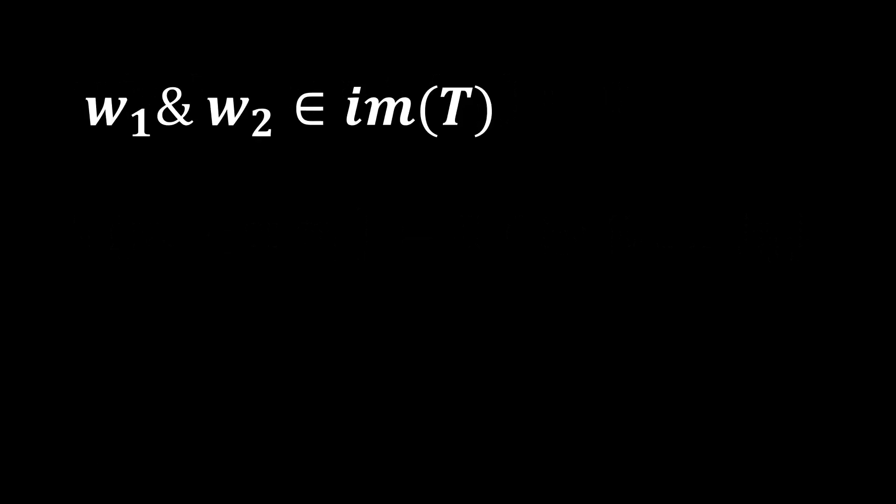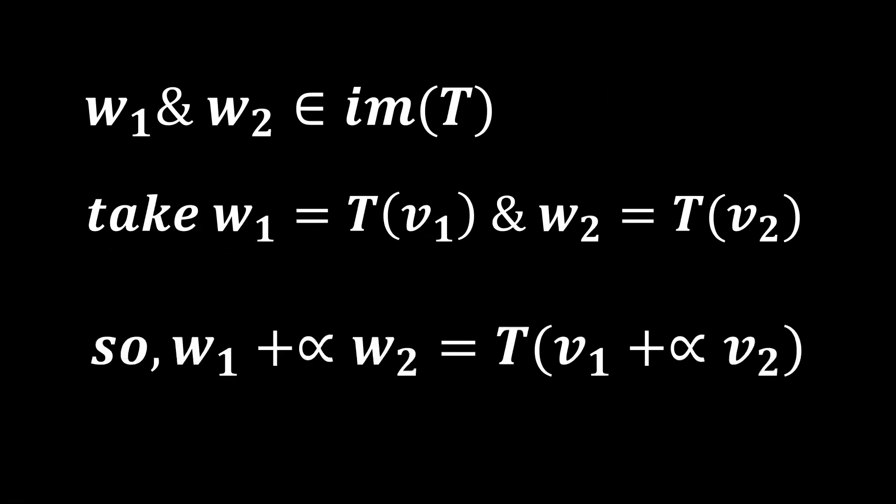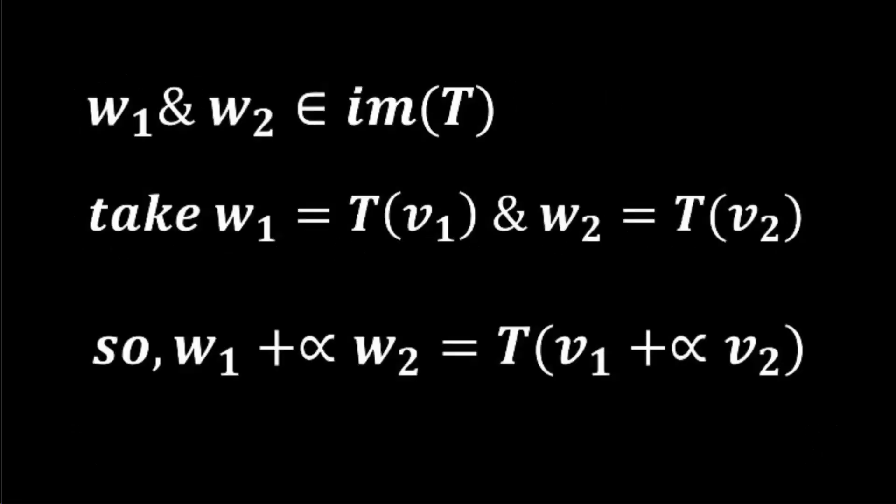Also, the sum of the multiple of two vectors in the image set is still in the image set due to the fact that we could find a corresponding pre-image vector of that vector.